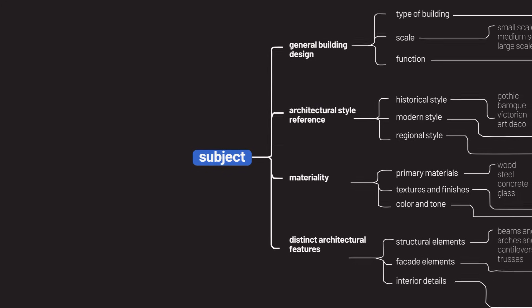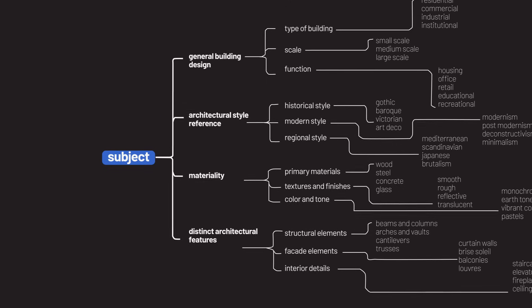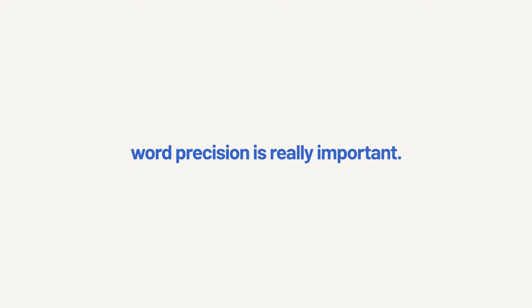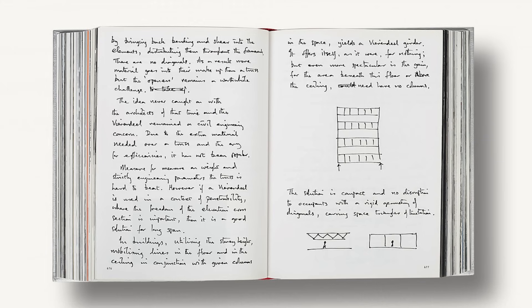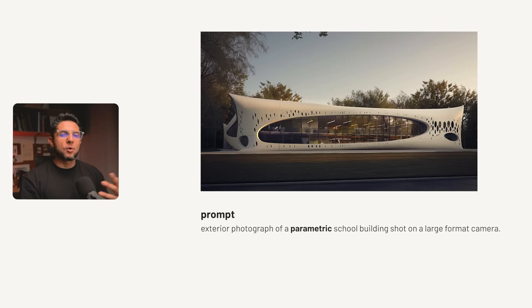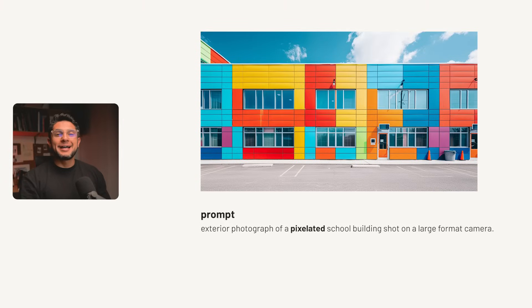The subject component is key to directing Mid Journey's focus on particular aspects of a building or structure, including the overall architectural design, specific elements, and materials. Word precision is really important when talking about overall building design. I recommend grabbing your favorite architecture book and reading descriptions to find specific words. You can use modern, Victorian, or brutalist, but you can also be much more specific with words like parametric, organic, deconstructivist, sculptural, pixelated, monolithic, modular, or lattice.